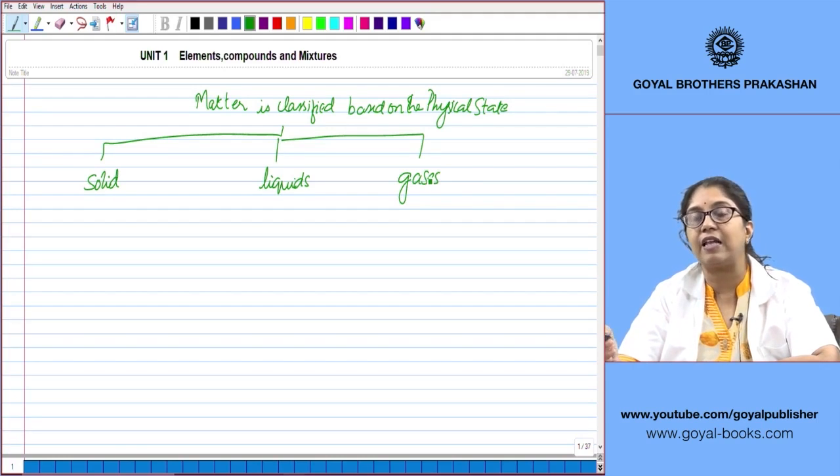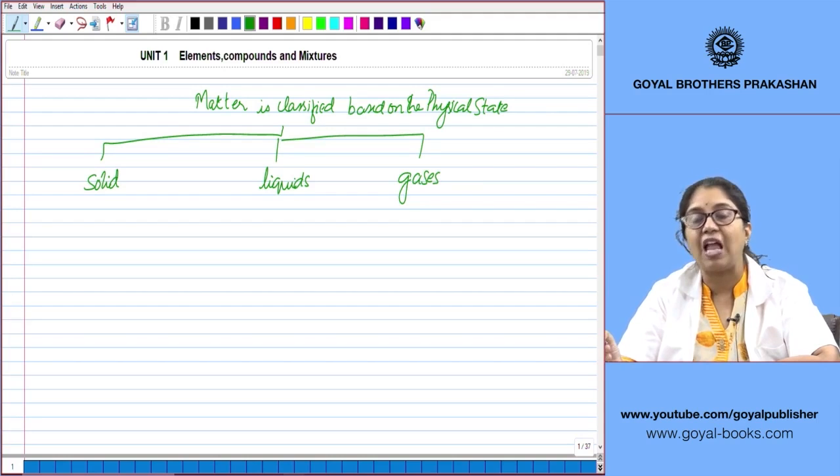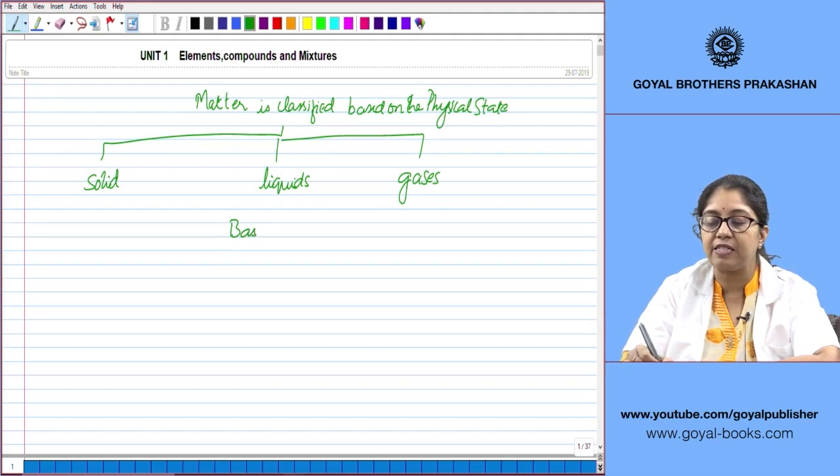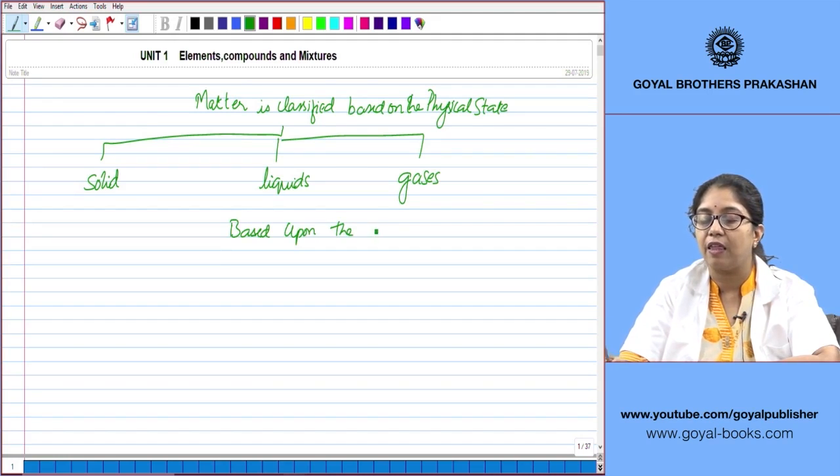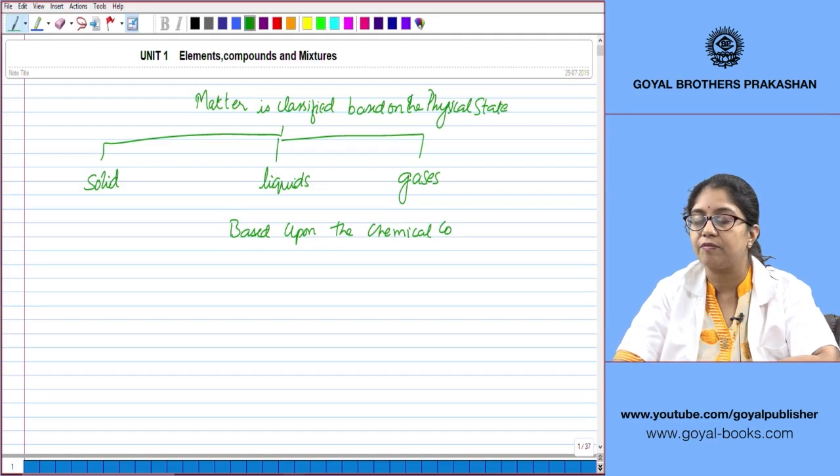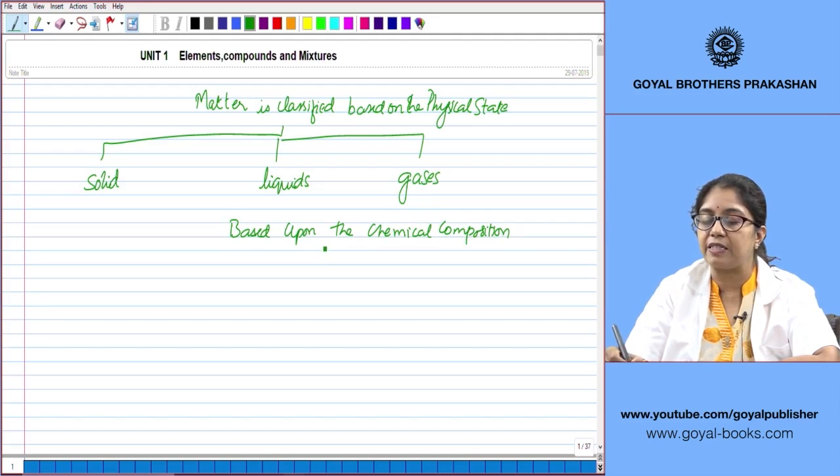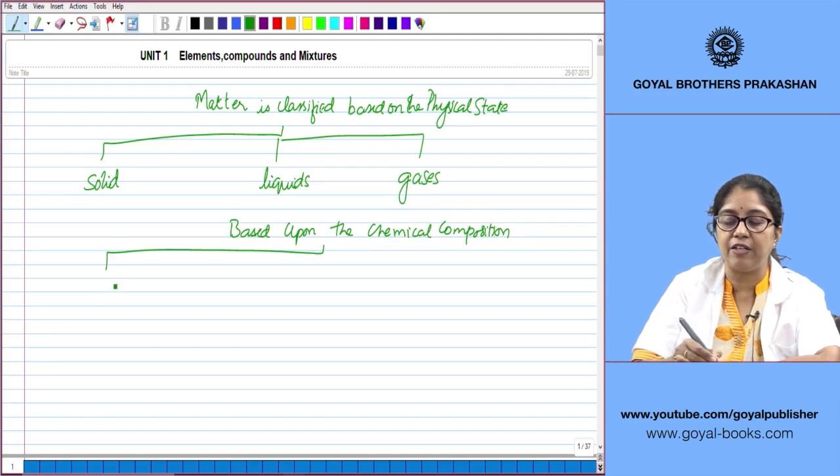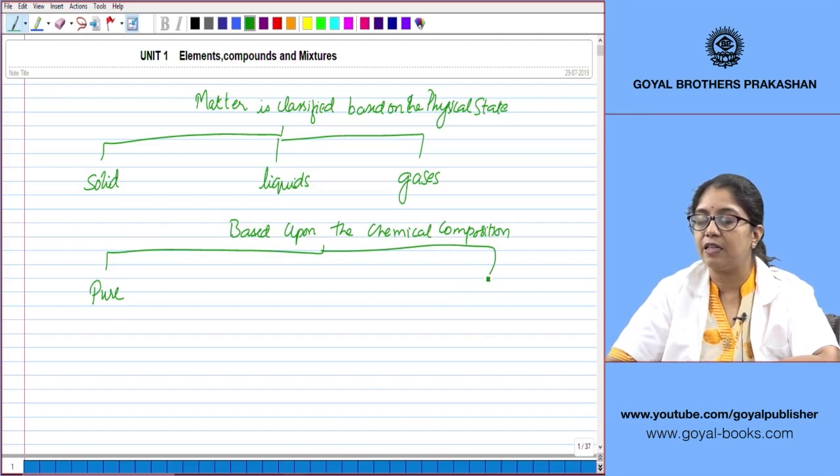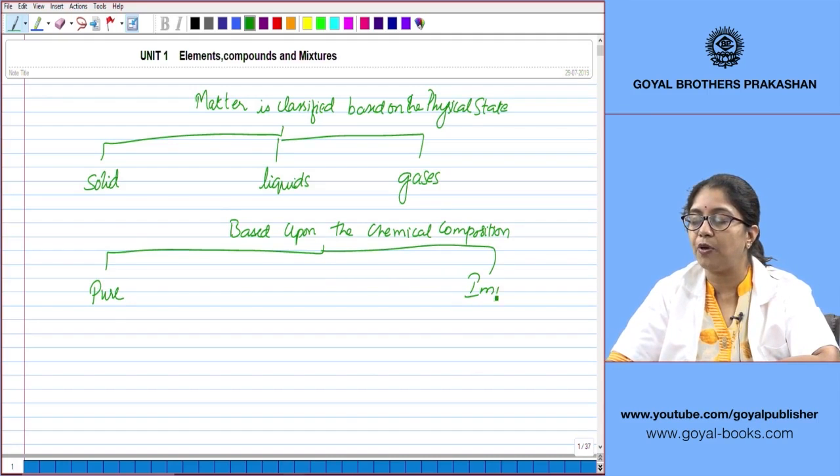There is yet another classification of matter and this classification of matter is based upon the chemical composition. So matter can be divided into pure and impure substances.